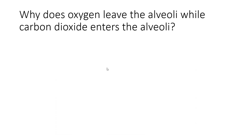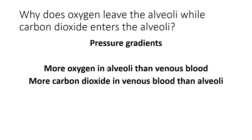So the question then is, why does oxygen leave the alveoli while carbon dioxide enters the alveoli? And the answer is flow down gradients. We've got more oxygen in the alveoli than the venous blood that enters the pulmonary capillary. However, there's more CO2 in the venous blood that enters the pulmonary capillary than there is in the alveoli.